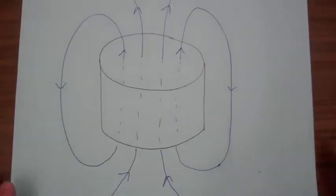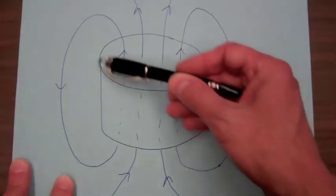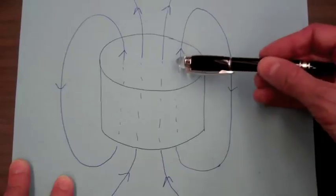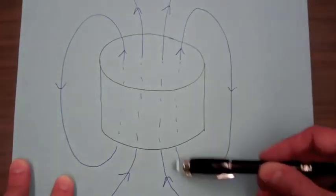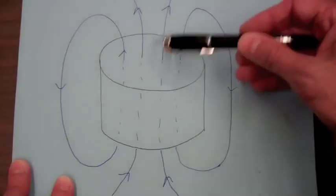This illustration should help clarify. So here we have our magnet, and so the magnetic fields come out the top of the magnet and come around and back in the bottom and through the magnet.